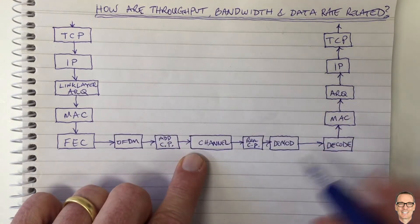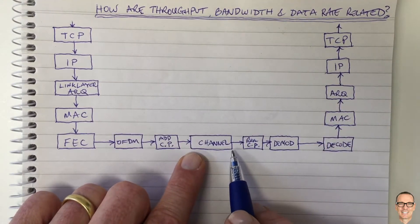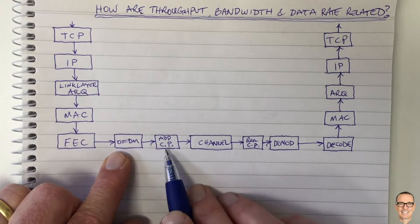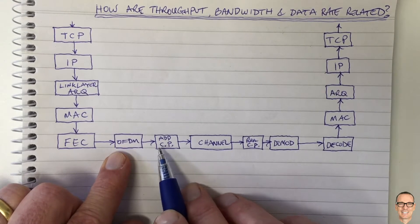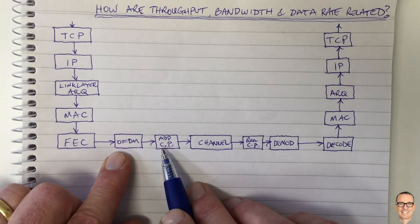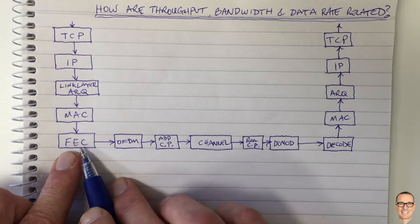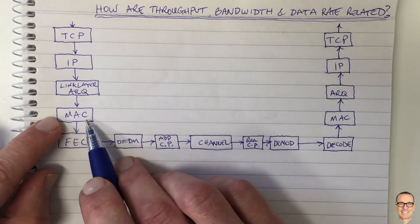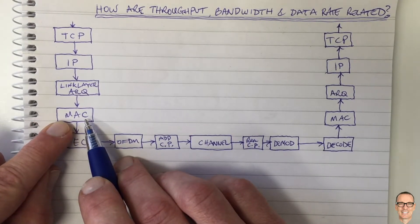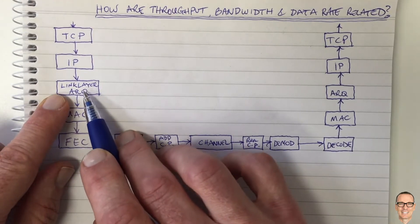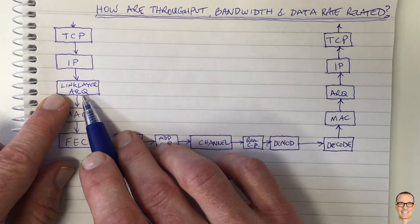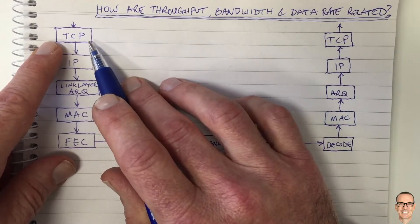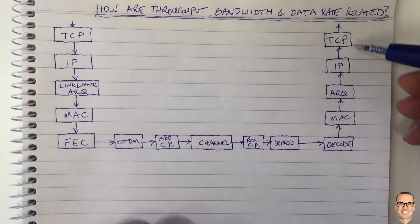Here I've drawn a diagram of what happens to the data. Starting at the middle, here's the channel. To modulate our signal across the channel, we have OFDM with a cyclic prefix. We also have forward error correction to overcome errors on the channel. Higher layers include a MAC layer for dealing with contention between different users, an ARQ layer for requesting retransmissions of packets received in error, and an IP and TCP layer which also requests retransmissions of TCP packets received in error.